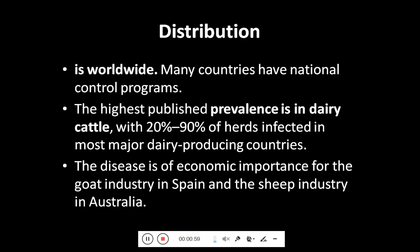Coming towards its distribution, it is distributed worldwide. Many countries have national control programs. The highest published prevalence in dairy cattle is where 20% to 90% of the herd is infected in most major dairy producing countries. The disease is of economic importance especially for the goat industry in Spain and the sheep industry in Australia.